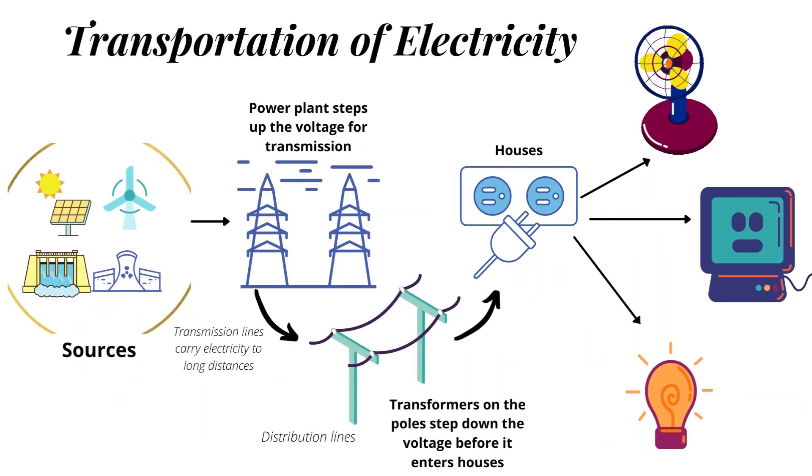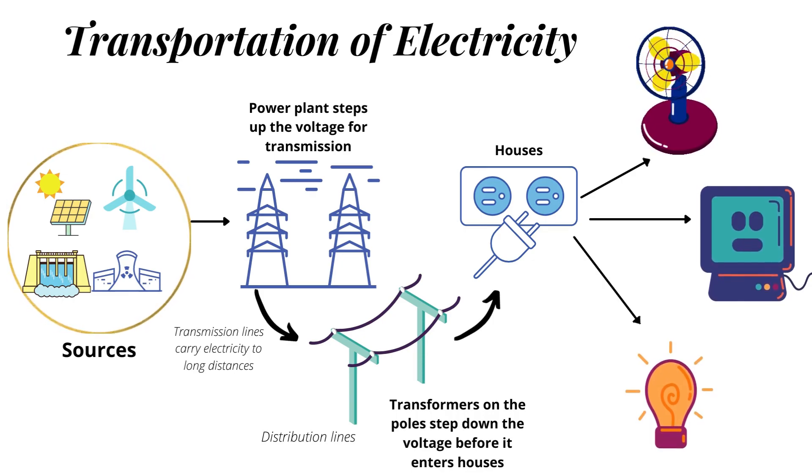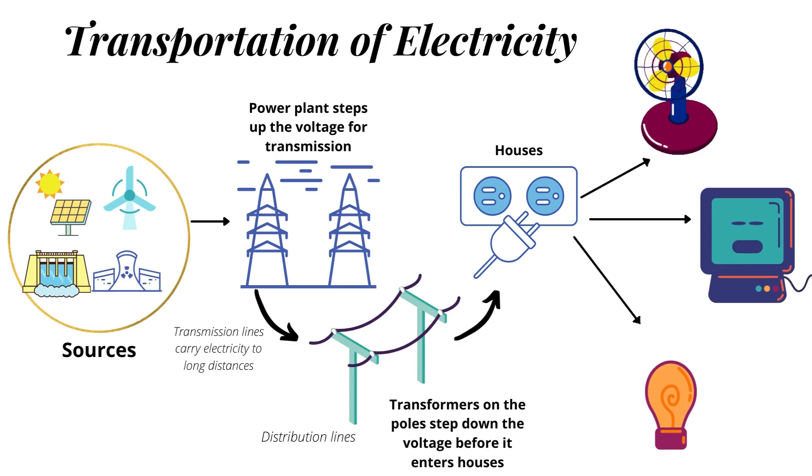How is electricity transported? We get electricity from our sources. The power plant steps up the voltage for transmission and further it is distributed by the distributing lines.